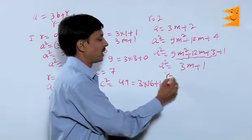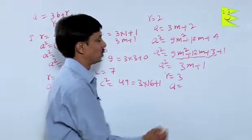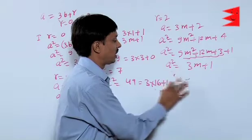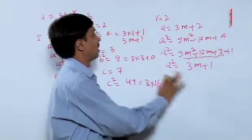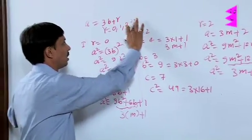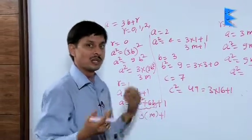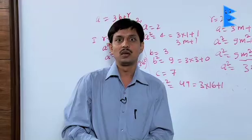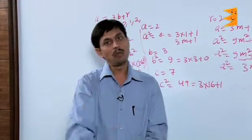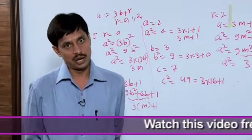Now, we are going to take the last case when r equals 3. Here I am sorry, we cannot take r equals 3 because we have taken only 3 as the divisor. If it is the divisor, we will take only 3 cases: 0, 1 and 2. We are finding the squares are either in the form of the multiples of 3 or multiple of 3 increased by 1.